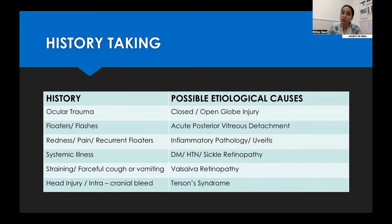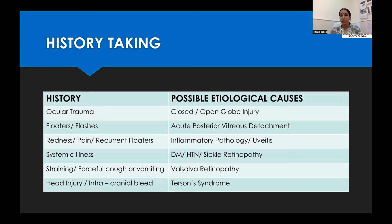If the patient gives a history of ocular trauma, it could be due to an open or closed globe injury. If the patient reports recurrent flashes or floaters, it could be due to acute PVD. Recurrent redness, pain, or floaters suggest an inflammatory cause or uveitis. We must inquire about systemic illnesses since diabetic or hypertensive retinopathy can cause vitreous haemorrhage, and strenuous activity should be asked about to rule out Valsalva retinopathy.